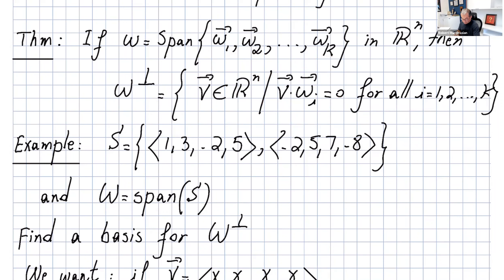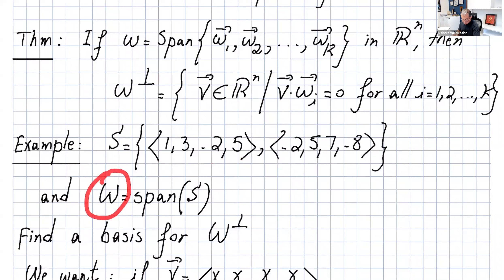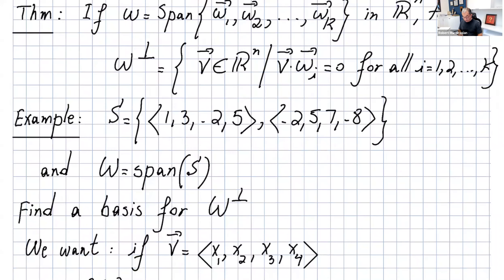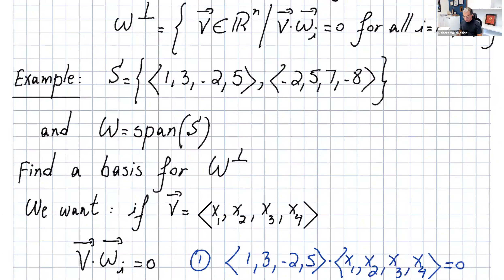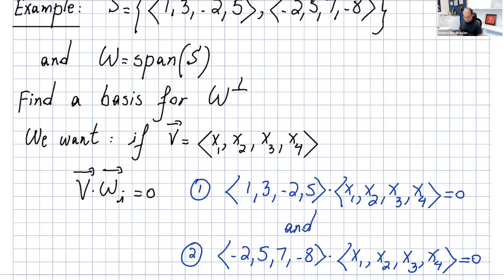Let's see an example. Let's say we have a set s with two vectors in R4, and w is the span of s. We want to find the basis for w-perp. What we're looking for is all vectors x1, x2, x3, x4 in R4 such that v dot wᵢ equals zero.